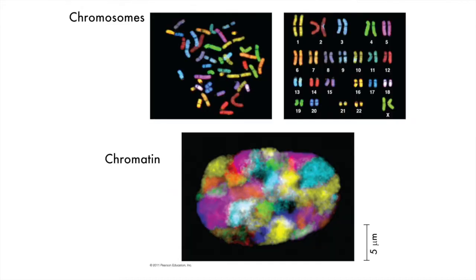This last image here is of the chromatin when it's condensed into chromosomes, and then ordered over here on the left and right, and then down below as uncondensed chromatin in the nucleus. The chromosomes have been stained with fluorescent dyes, but you probably already guessed that.